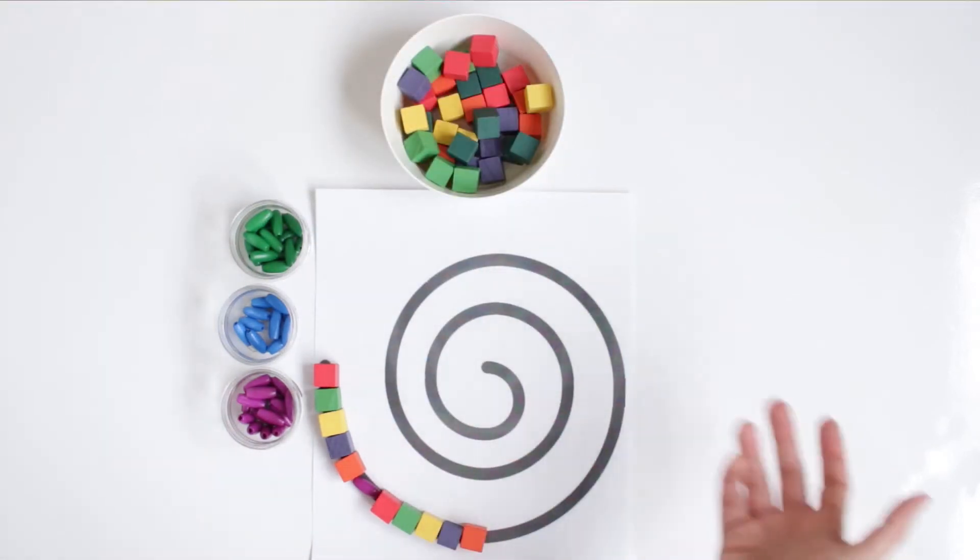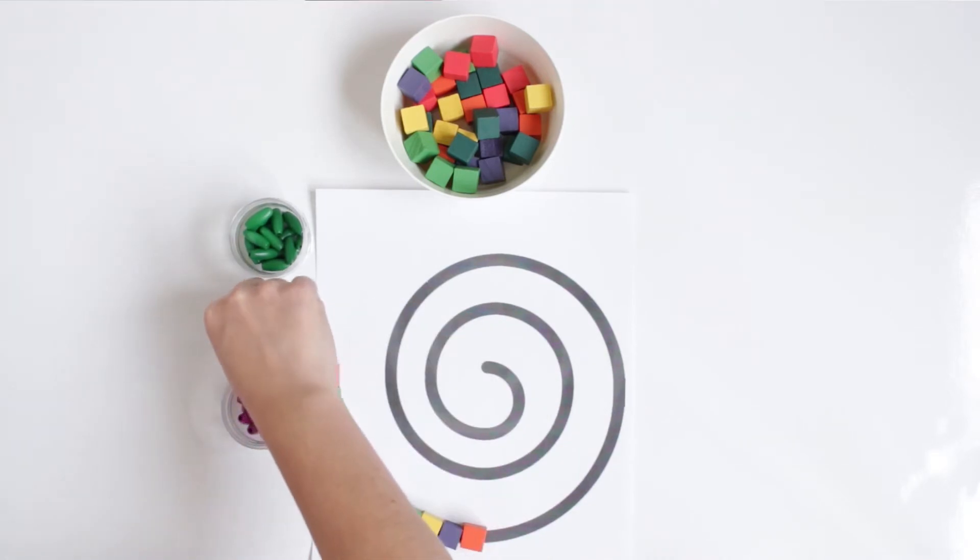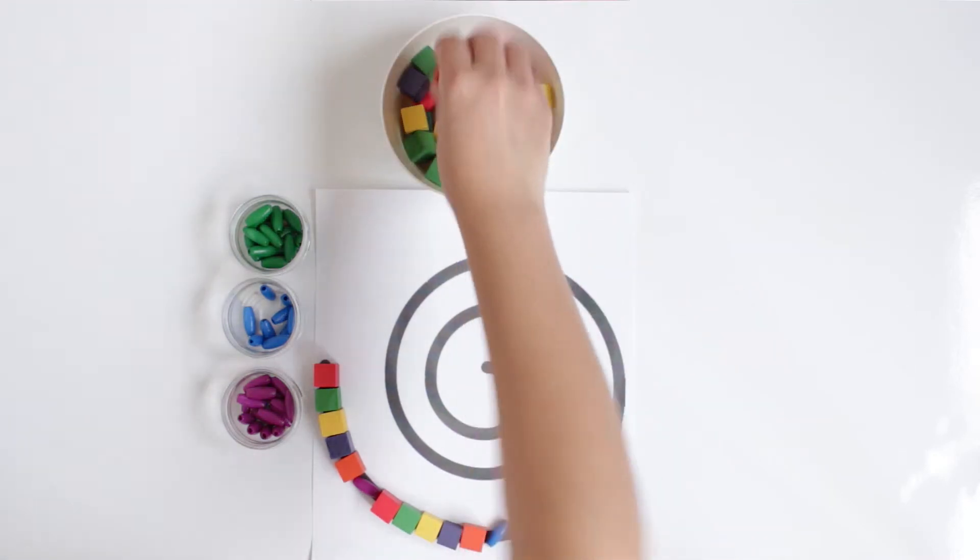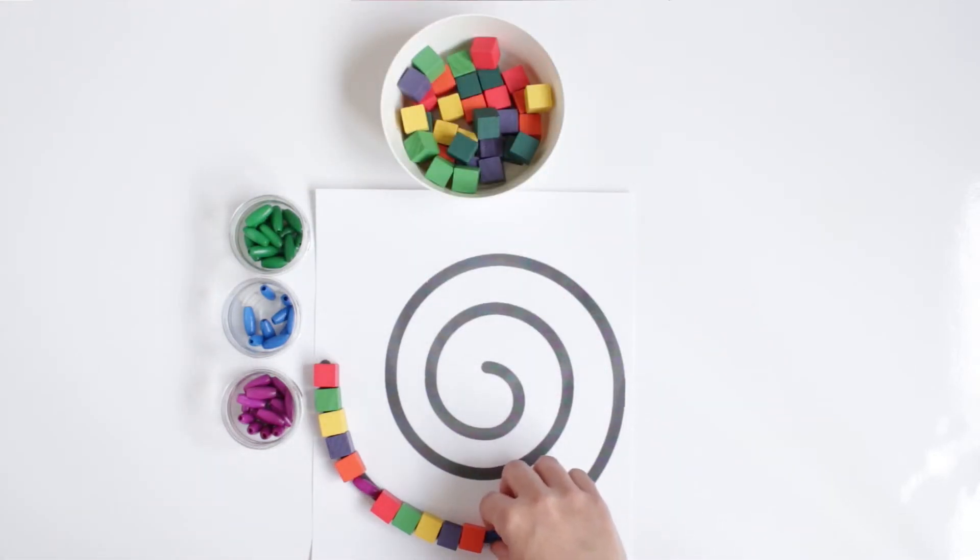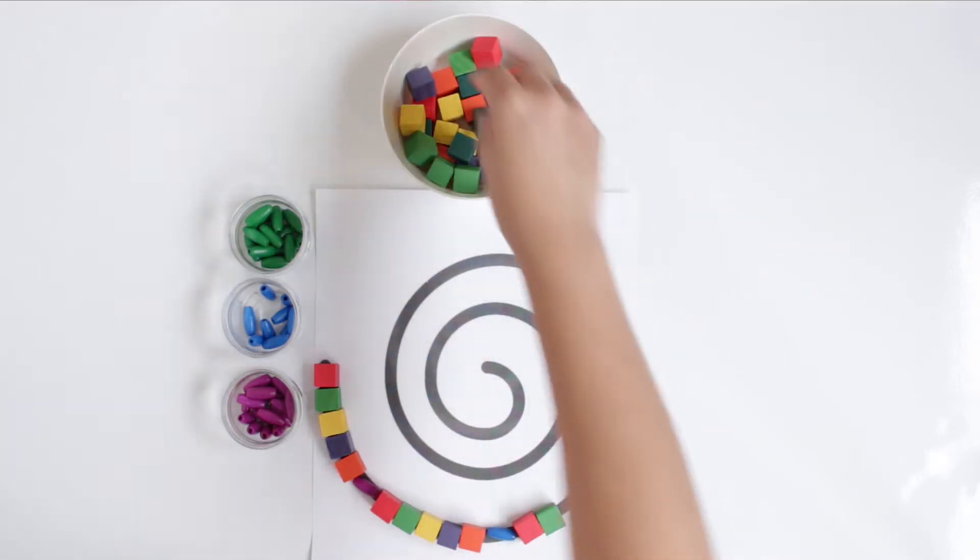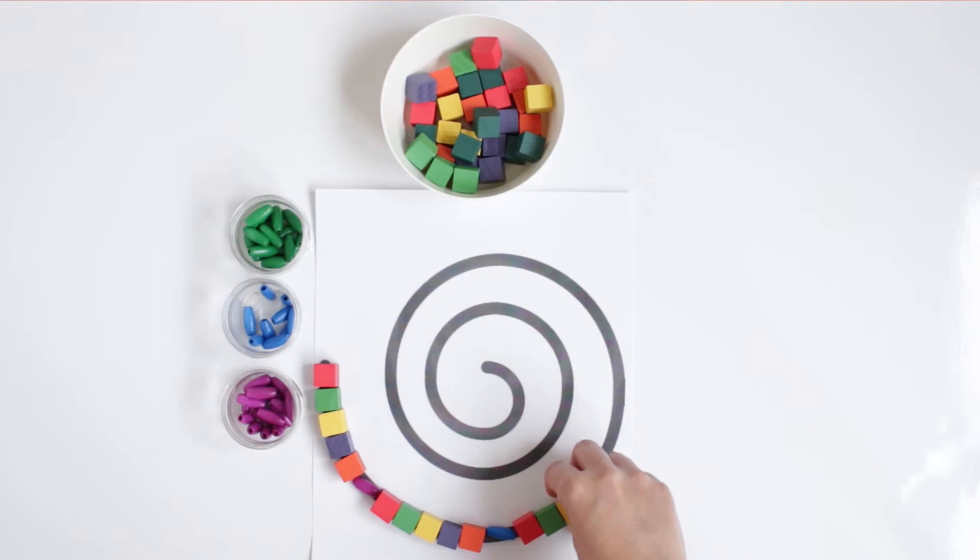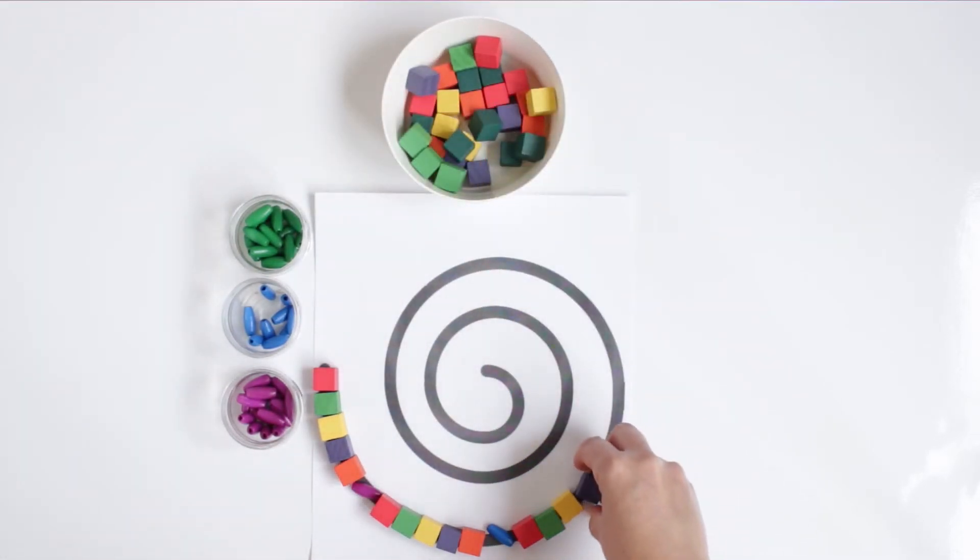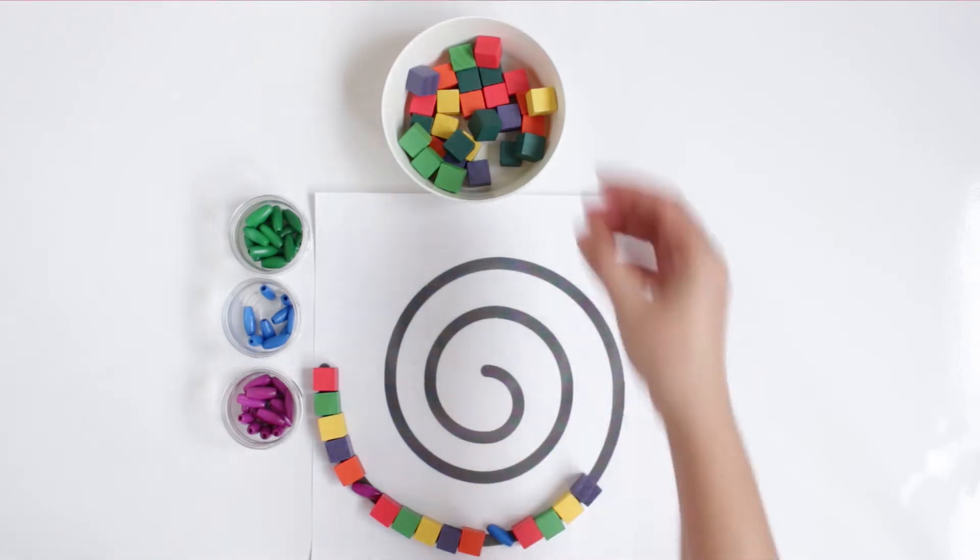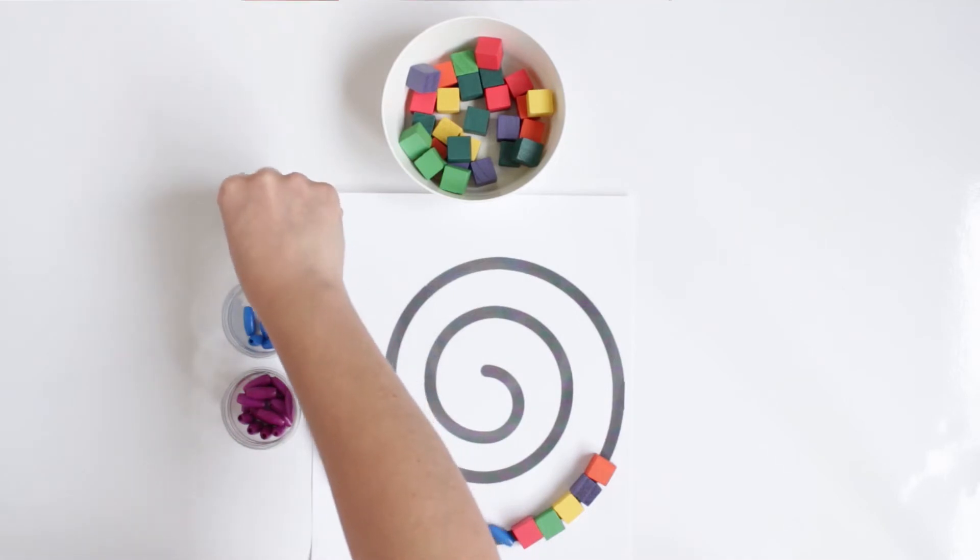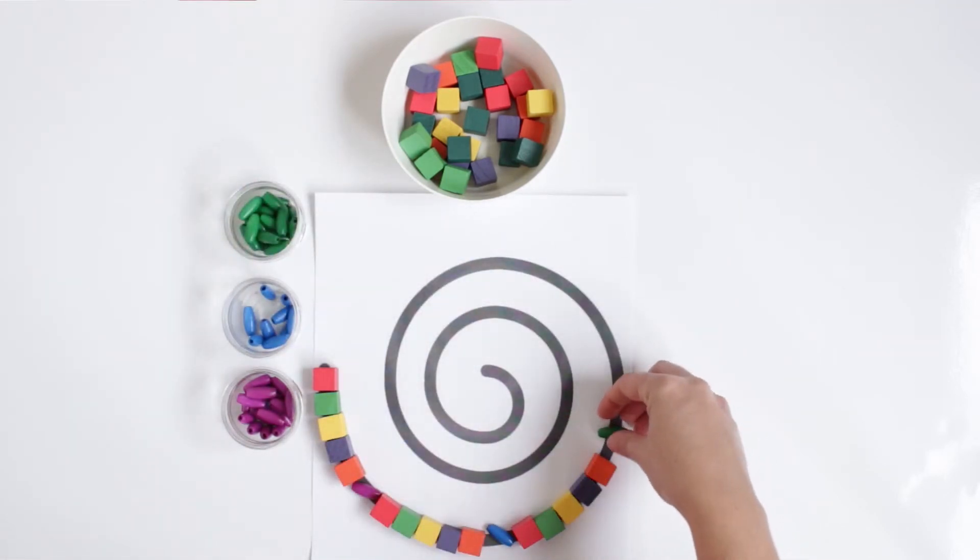Orange, and then you can ask them to put the blue one, for example. Then do again: red, green, yellow, purple, and orange. And then finish with the green one, for example.